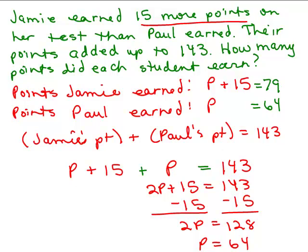Let's see if that would make sense. With these two numbers, does it show that Jamie earned 15 more points? Yes, because 64 plus 15 is 79, and if you add them up, do you get to 143? Let's do that little check. 79 plus 64, and yes, that does add up to 143, so it looks like these are the correct answers.